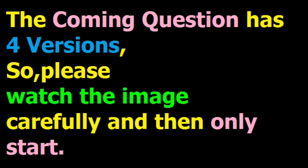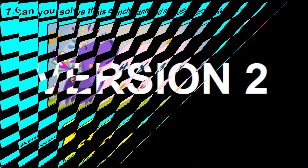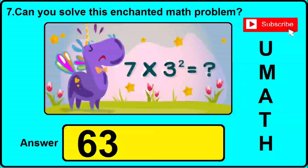Question number 7 has got 4 different versions or types, so you need to watch the image and click the option shown in the answer box. In version 1, if the image shows 4 x 3 squared equals what, the correct answer is 36. In version 2, it is given 7 x 3 squared equals what — the correct answer is 63, so just click 63 if you find this sort of image in question number 7.